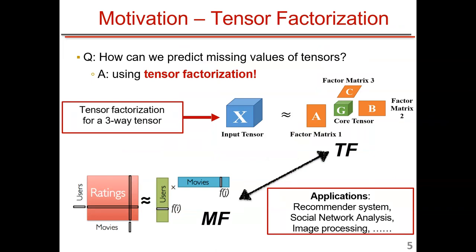The conventional way to predict missing tensor values is using tensor factorization techniques such as CP factorization and Tucker factorization. These methods decompose the input tensor into vector matrices and a core tensor, similar to matrix factorization but generalized to higher dimensions. The original tensor can be reconstructed by multiplying the core tensor and vector matrices. This has been used in recommender systems, social network analysis, and image processing.